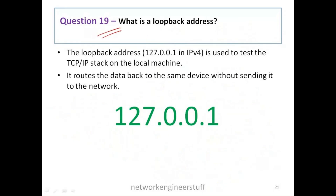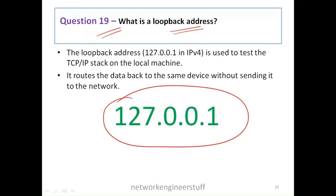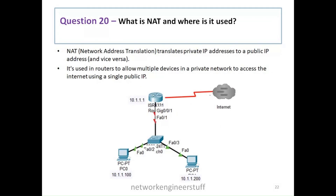Question number 19: what is a loopback address? The loopback address is 127.0.0.1. It is basically used to test the TCP/IP stack on the local machine — a self-test. It routes the data back to the same device without sending it to the network.